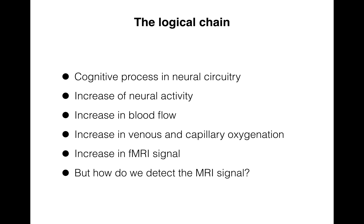The logical chain is that we've got some cognitive process being implemented by neural circuitry. An increase of neural activity in a particular brain region causes an increase in blood flow to that region, which causes an increase in venous and capillary oxygenation of that local tissue, which leads to an increase in the functional MRI signal. The question is: how do we detect that MRI signal?